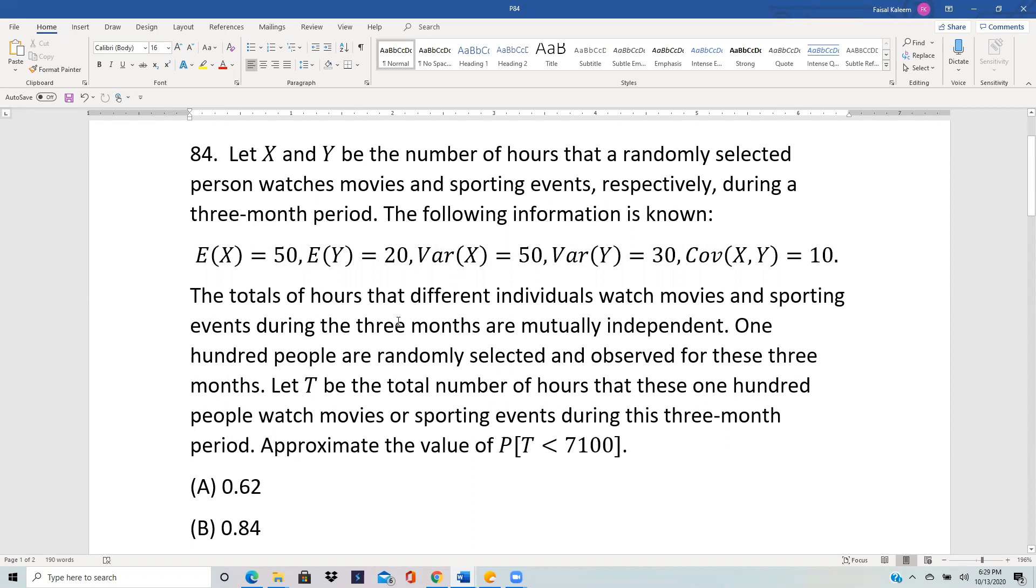The total hours that different individuals watch movies and sporting events during the three months are independent. 100 people are randomly selected and observed for these three months.